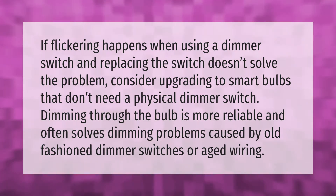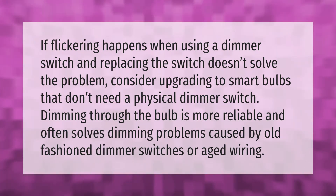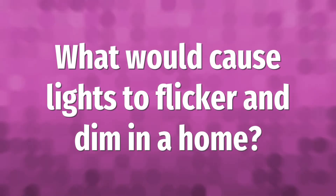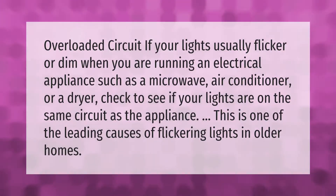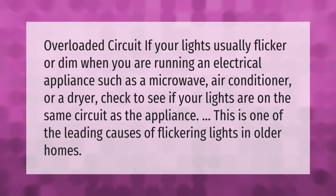Overloaded circuit: if your lights flicker or dim when you are running an electrical appliance such as a microwave, air conditioner, or a dryer, check to see if your lights are on the same circuit as the appliance. This is one of the leading causes of flickering lights in older homes.